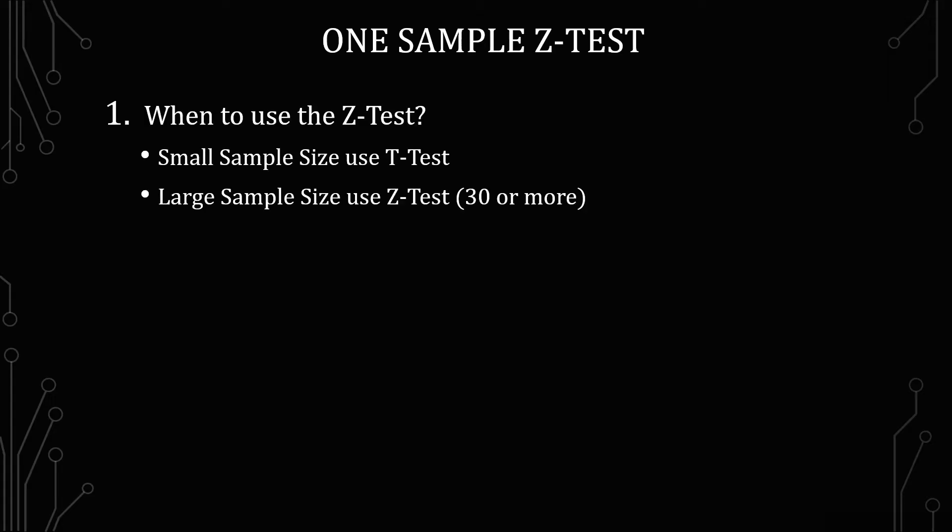The first thing I want to go over is when to use the z-test instead of the t-test. We know the t-test is used when we have less than 30 samples. We use the z-test when there's 30 or more samples, and the reason is because as you look at the degrees of freedom, as it approaches 30 and goes beyond that, it starts looking very much like the z-distribution, so it becomes negligible in terms of the differences.